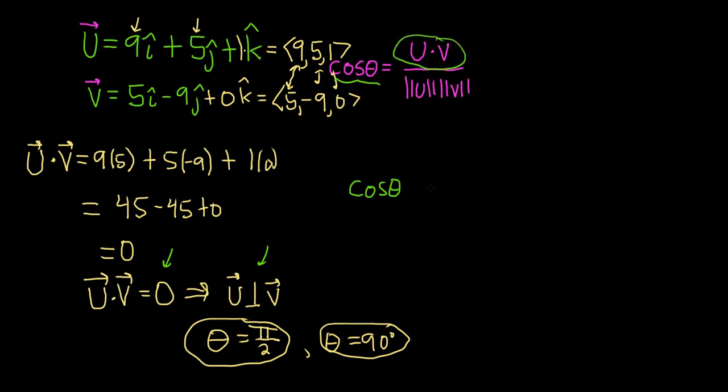well, u dot v is 0. So, this whole thing becomes 0. So, then you're in the situation where the cosine of theta is equal to 0. Well, that means that theta is pi over 2.